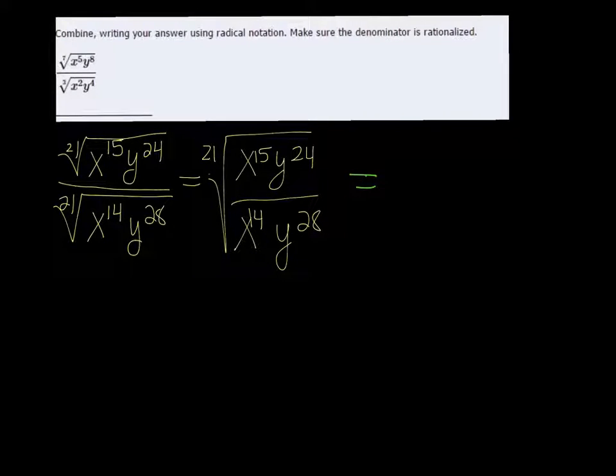That's going to be equal to, now 15 minus 14 is just x. 24 minus 28 is negative 4, so we're going to keep that y to the 4th on the bottom. Because you don't want to have negative exponents. So we get the 21st root of x over y to the 4th.